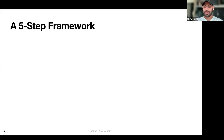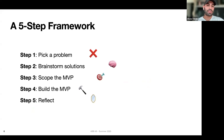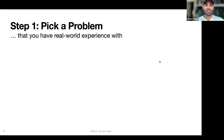A different way to do this is distilling story two into a five-step framework. These five steps are: pick a problem, brainstorm a solution, scope the MVP, build the MVP, and then reflect on it. Let's go through these one step at a time.